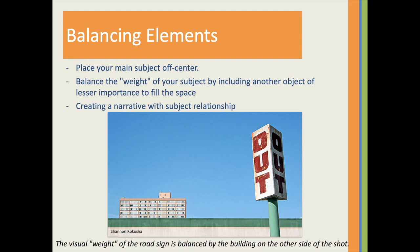When you place your main subject off-center, as with the rule of thirds, it creates a more interesting photo but it can also leave a void in the scene — a negative space — which can make it feel empty. So you should balance the weight of your subject, here the 'out' sign, by including another object of lesser importance to fill the space. Here our space is filled with the building in the background. The visual weight is balanced, allowing the eye to bounce back and forth between the elements creating a dynamic picture.